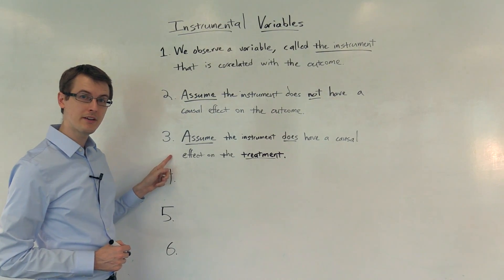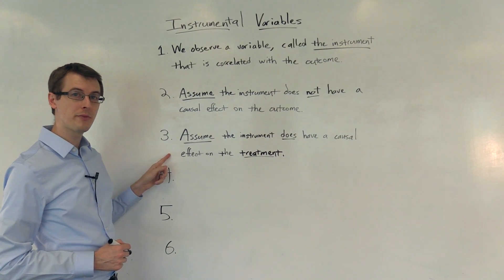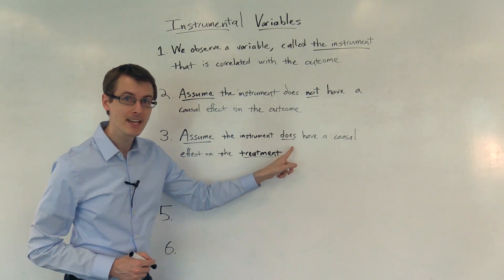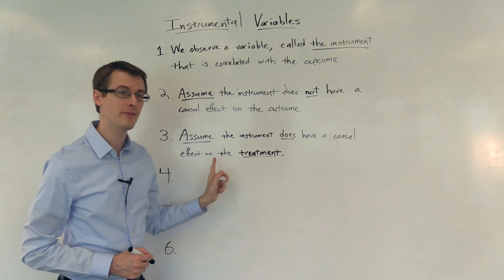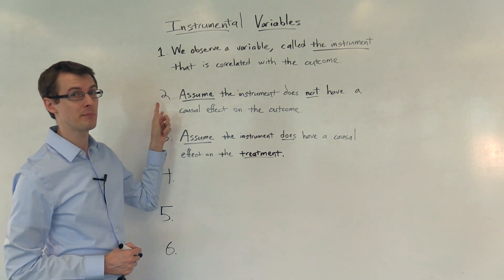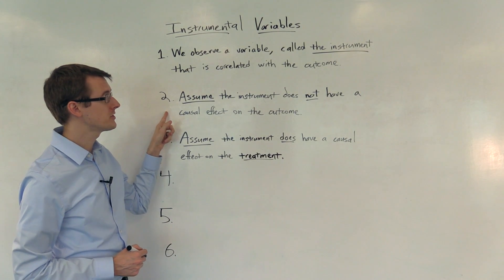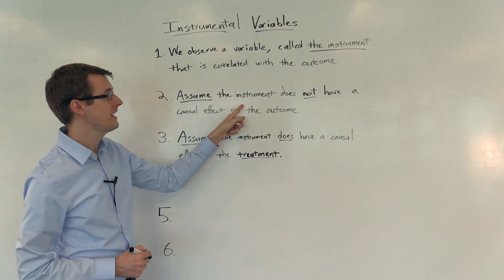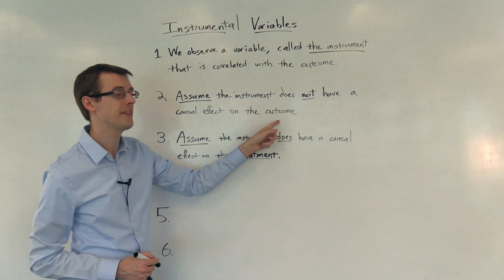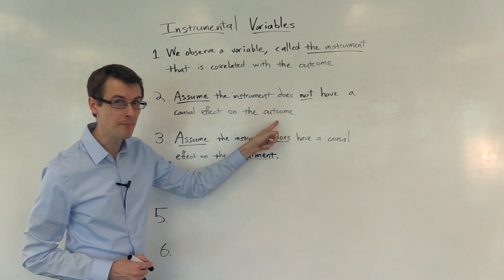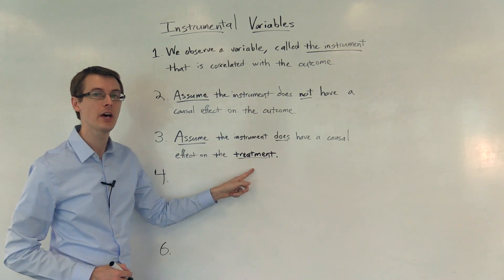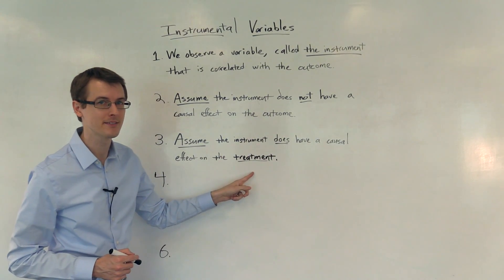Step 3: We assume that the instrument does have a causal effect on the treatment variable. So in Step 2 we assume the instrument does not have a causal effect on the outcome, but it does have a causal effect on the treatment.